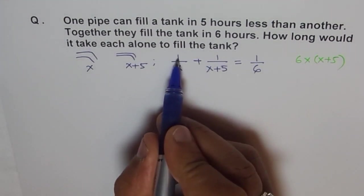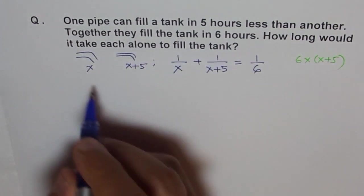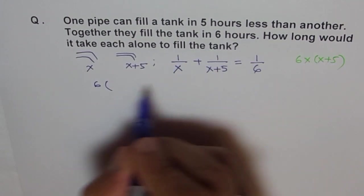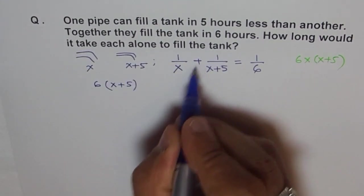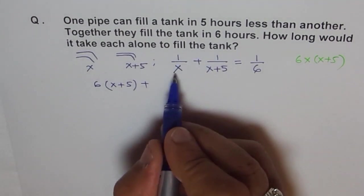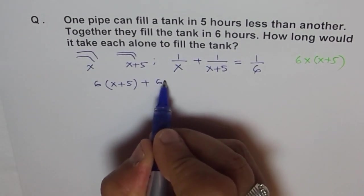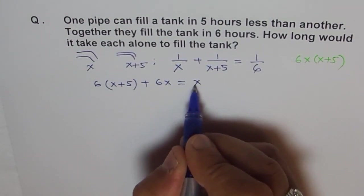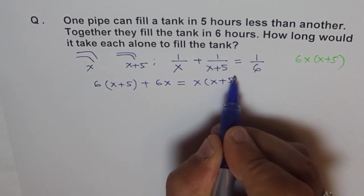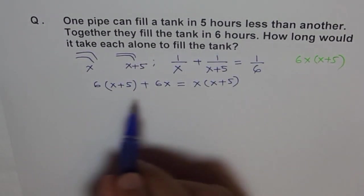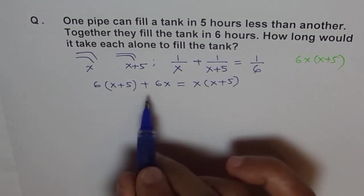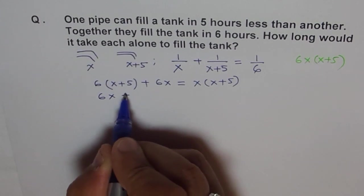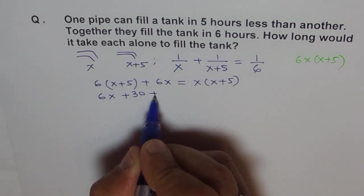We get here one will get multiplied by these two, so let me start from here. We get 6 times x plus 5, plus here one will get multiplied by 6 and x, we get 6x, and this one gets multiplied by these two factors. So it is x times x plus 5. That's our equation to solve without any denominator or fraction parts.